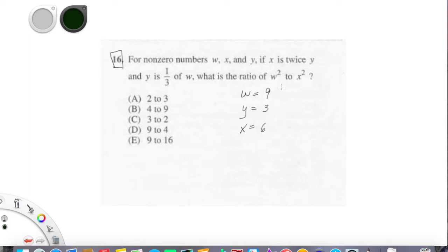Now, they ask us about w squared and x squared. That's easy enough. 9 squared is 81. And we'll put, just to be clear here, this is w squared. And then 6 squared is 36. That's our x squared.